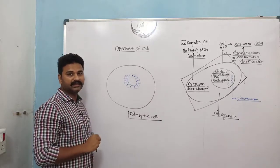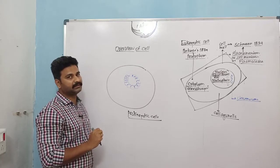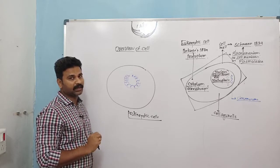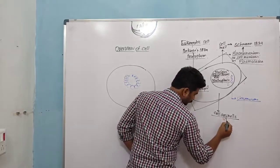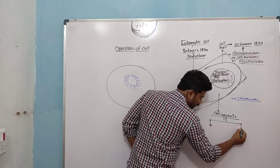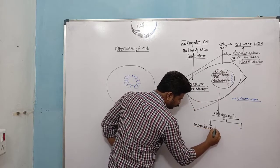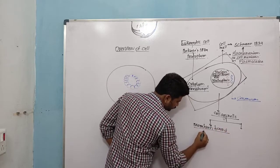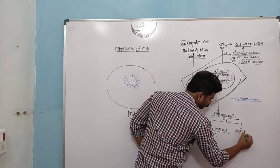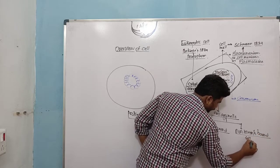There are no membrane-bound cell organelles present in the case of a prokaryotic cell. There are two types of cell organelles: membrane-bound cell organelles and non-membrane-bound cell organelles.